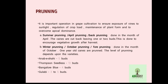Pruning is an important operation in grape cultivation to ensure exposure of the vine to sunlight, regulation of crop load, maintenance of plant form, and to overcome apical dominance. Two types of pruning are practiced: summer pruning and winter pruning. Summer pruning is also called April pruning or back pruning, done in April — the canes are cut back leaving one or two buds to encourage vegetative growth after harvest.